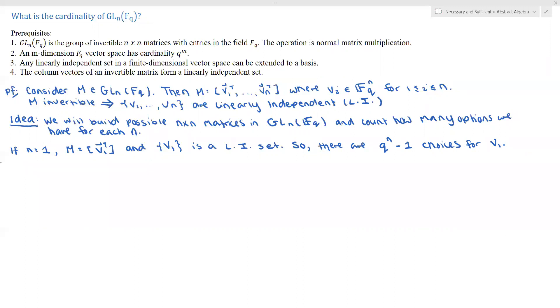Now let's consider building a 2 by 2 matrix. So fix V1 and consider M equal to V1, V2. Then again, we need to have that V1, V2 is a linearly independent set.